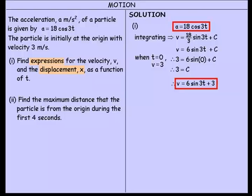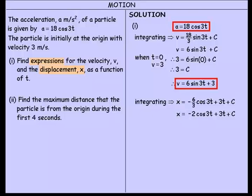We're also asked to find the expression for displacement x, so we integrate our velocity equation. x equals the integral of that: minus 6 on 3 cos 3t, plus the integral of 3t giving 3t, plus a constant of integration. That simplifies to x equals minus 2 cos 3t plus 3t plus c, replacing minus 6 on 3 with negative 2.